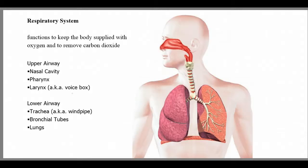The respiratory system is separated into the upper airway and the lower airway. It consists of the nasal cavity, the pharynx, which is composed of different parts, the larynx (a.k.a. the voice box), the trachea (a.k.a. the windpipe), bronchial tubes, and the lungs, which are paired organs.